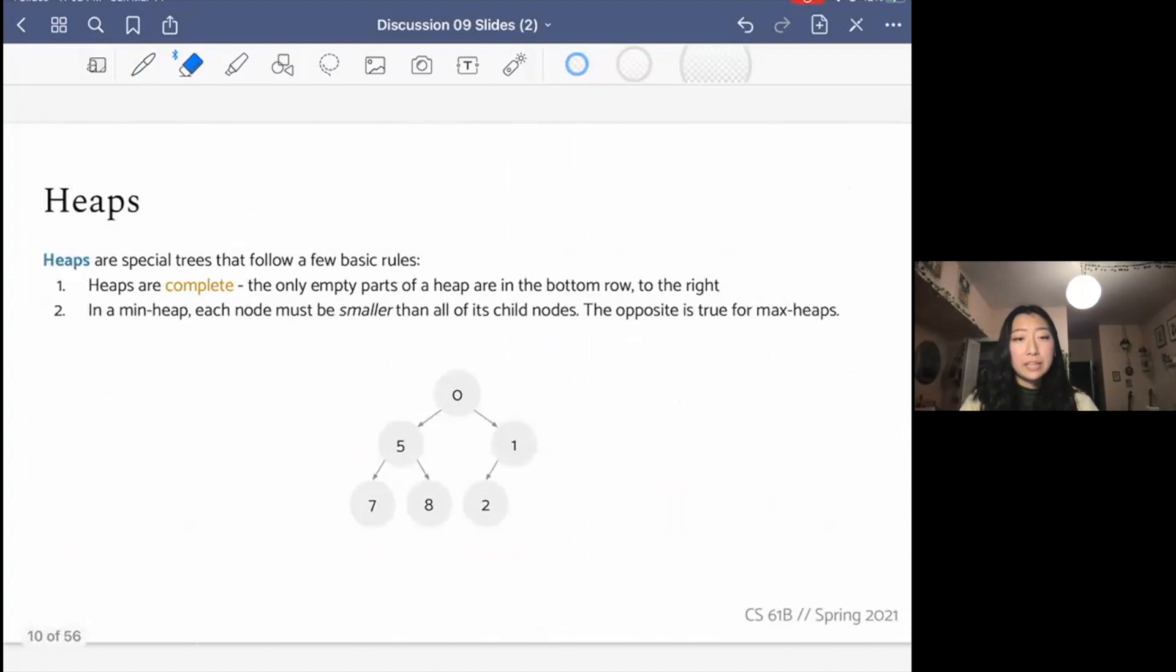Lastly, we're going to talk about heaps. Heaps are special trees that follow a few basic rules. One is that heaps are complete. The only empty parts of a heap are in the bottom row to the right. For example, this is not a valid heap because there are empty spots and they're in the bottom row, but they are not to the right. Instead, the empty spots are to the left here. On the other hand, this is where all the empty spots are to the right. They're not only in the bottom row. We should have filled out this row before we came moving over here. And so the one in the middle is our example of a valid heap.